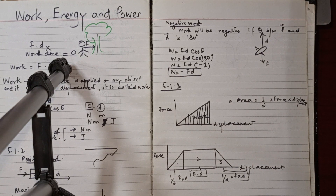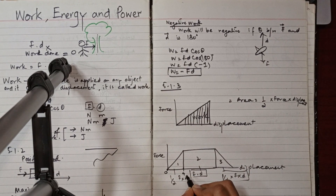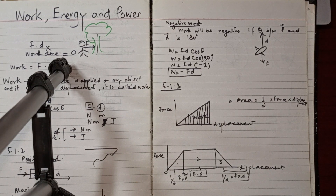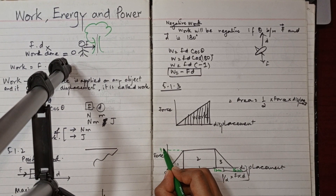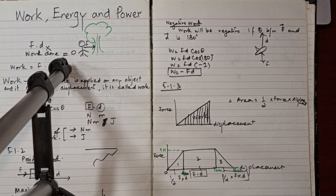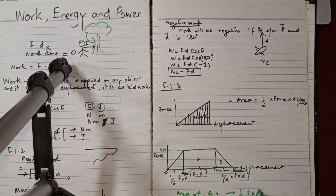For a worked example: displacement values are 0, 4 m, 12 m, and 16 m on the x-axis, and the constant force is 4 Newtons. We need to find the total work done using the area method.